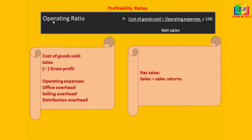Operating ratio is found using cost of goods sold plus operating expenses divided by net sales. Cost of goods sold is nothing but sales minus gross profit. Operating expenses include office expenses and selling and distribution overhead — the expenses that are affected by the operation of the business. Net sales is sales minus sales returns.